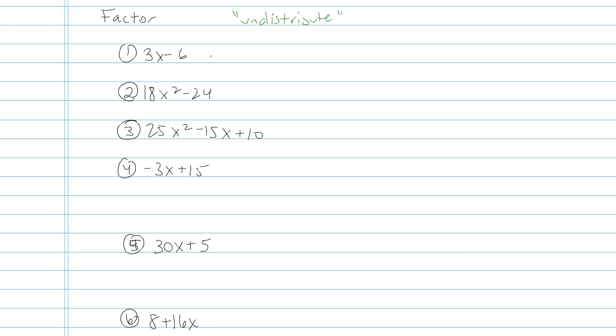If I want to look at this first thing, 3x minus 6, the number that goes into both of those terms is 3. So I'm going to write that outside parentheses, and then I'm going to undistribute the 3. 3 times what gives me 3x, and 3 times what gives me negative 6. There it is, that thing's factored.